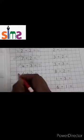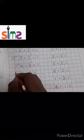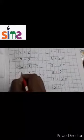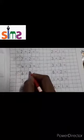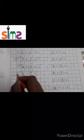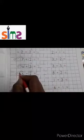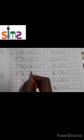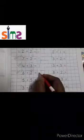Six: one, two, three, four, five, six. Two: one, two. Count all the lines: one, two, three, four, five, six, seven, eight. So six plus two is equal to eight.